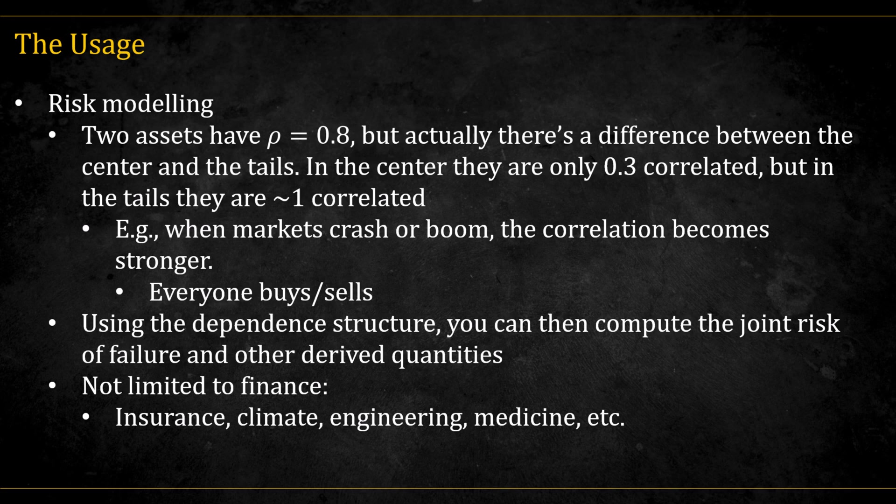By far the main usage is risk modeling. Correlation is blind to extremes. It only captures the average relationship across the entire joint distribution. But as we just saw, different regions of the distribution can behave very differently.